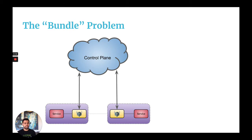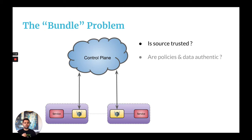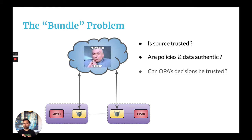Bundles are great, but we do have a problem. How does OPA know that these bundles are coming from a trusted source? OPA will assume that the policies and data in those bundles are authentic and not corrupt. But what if an attacker corrupts the policies in the bundle and OPA downloads this corrupt bundle and starts enforcing those corrupt policies, thereby compromising your system? How will you be able to trust the decisions that OPA is making?